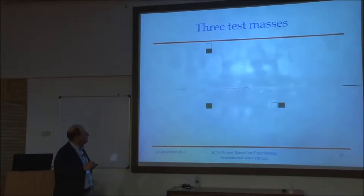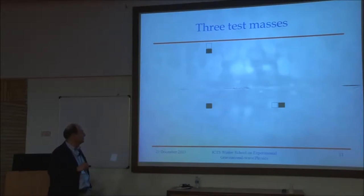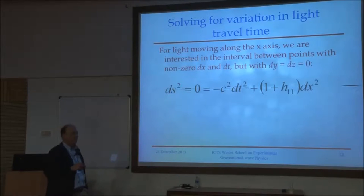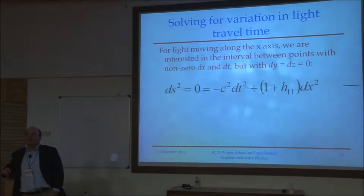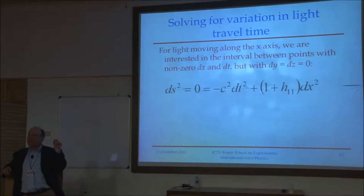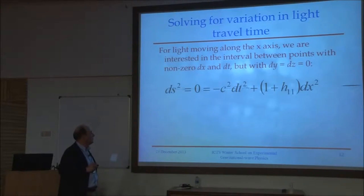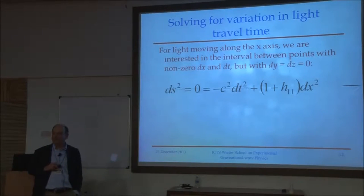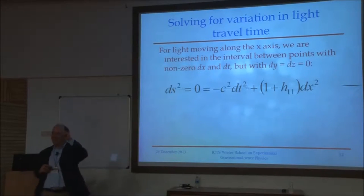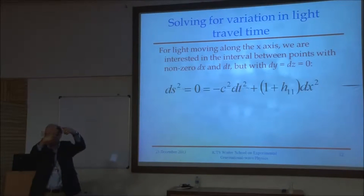We're looking at how this system responds to a gravity wave coming along the z direction with the plus polarization. There's one more bit of relativistic physics to recall: what is the interval between two events connected by a single ray of light? The answer is that any two events struck by the same flash of light have an interval of zero between them.